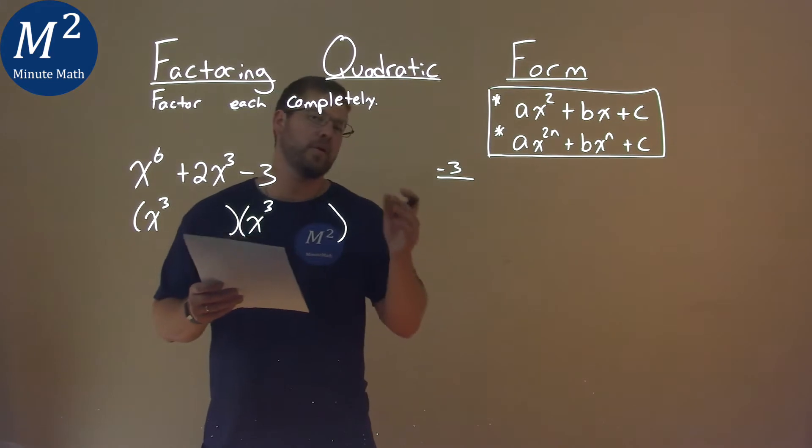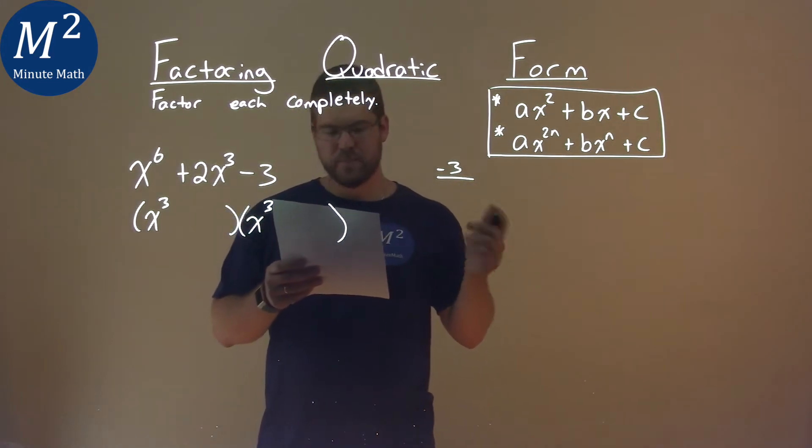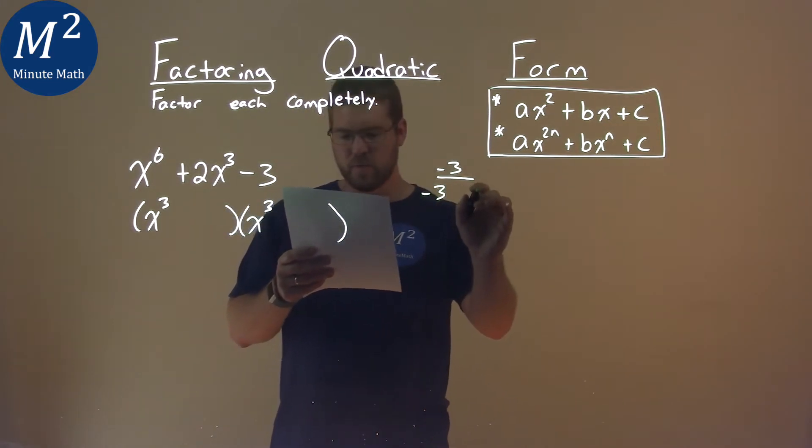One of the numbers will be positive, and one will be negative, but what two numbers multiply to be negative 3? That's a negative 3 and a positive 1, or negative 1 and a positive 3.